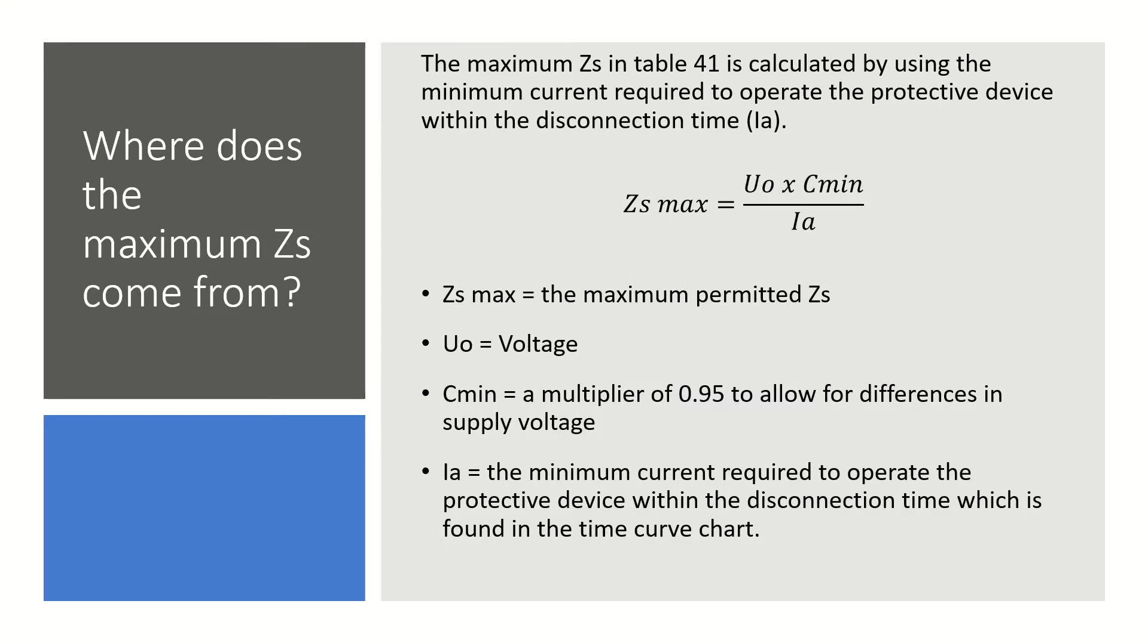So the first question is, where does the maximum Zs come from? The process for calculating the maximum Zs is explained in Appendix 3 of BS7671. The values are calculated by multiplying the voltage by Cmin, which is a correction factor of 0.95 to allow for differences in supply voltage, and then dividing by the minimum current required to operate the protective device, Ia.